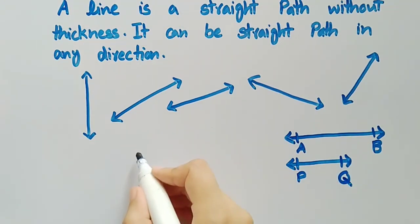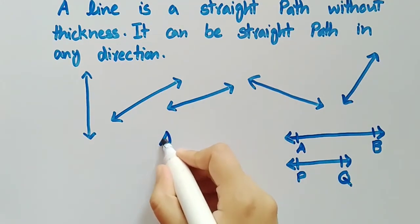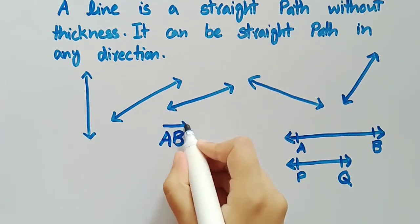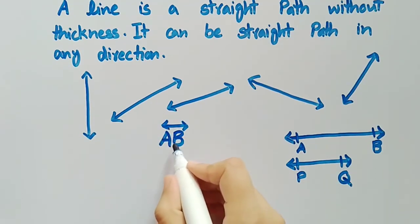We can see that the line AB is larger than the line PQ. We write the line AB as AB and above AB there is the symbol of line which represents the line AB.